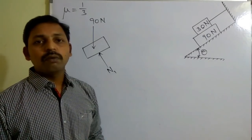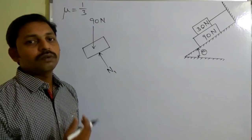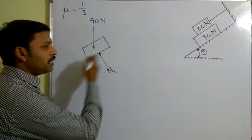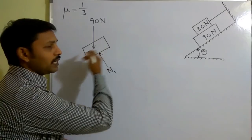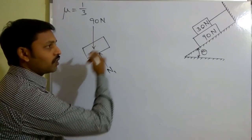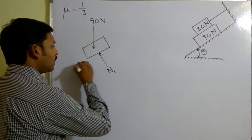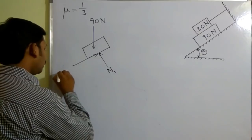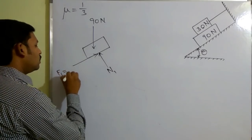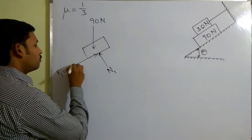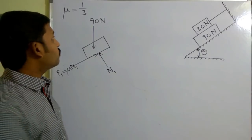In the question itself it is mentioned that the 90 Newton block has impending motion downwards. So when it is moving down the plane, in the opposite direction we can have the frictional force F1, which is equal to μN1.